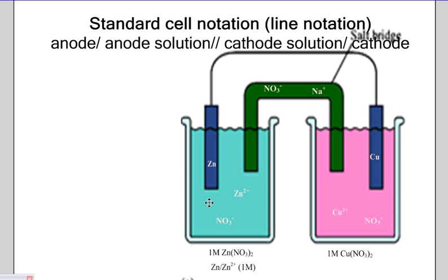On the anode side, you have zinc becoming zinc 2+. On the cathode side, you have copper 2+ becoming copper. Mush that together by separating it by a salt bridge, so we'll double line that because that's not taking part in the reaction, and you'll have the standard cell notation.